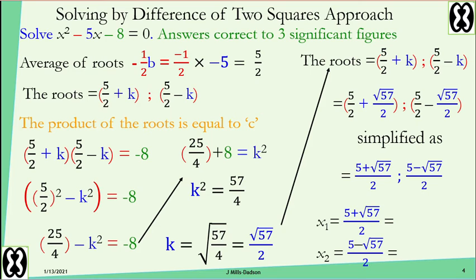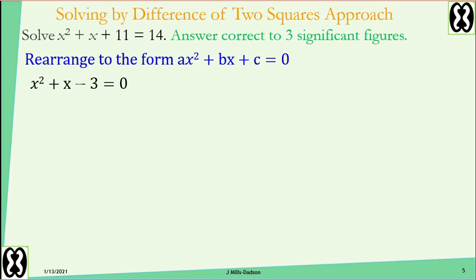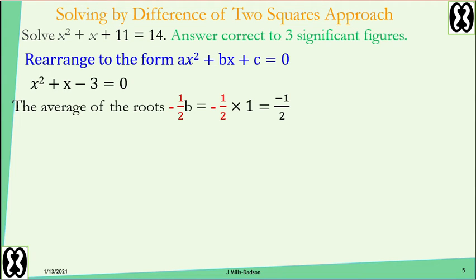Let's try another example. This time the equation is not equal to zero, so rewrite it by taking 14 from both sides. Once you have the new equation equal to zero, divide your b by negative 2. Here b is 1, so 1 divided by negative 2 gives negative one-half. Use negative one-half to set up the root expressions: negative one-half plus k for one root, and negative one-half minus k for the other.